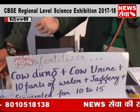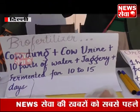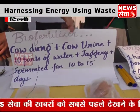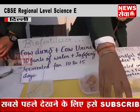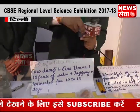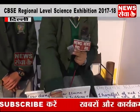The mechanism is very simple. We use cow dung, cow urine, water and add it to 10 parts of jaggery. This is the prototype of the fertilizer which is formed.